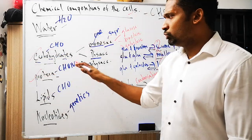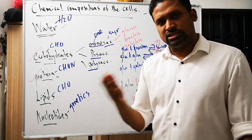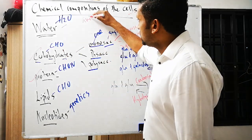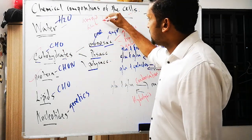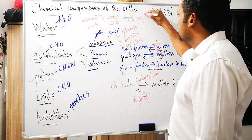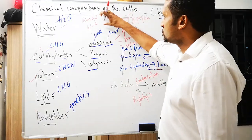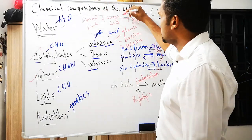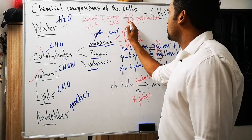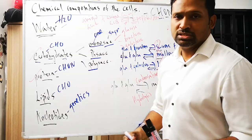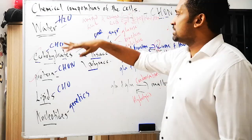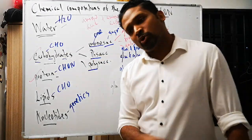Moving to protein — the simplest form is amino acid. Amino acid plus amino acid, through condensation (removing water), gives you a dipeptide. Dipeptide broken down is hydrolysis. Same concept: simple becomes complex is condensation; complex becomes simple is hydrolysis.